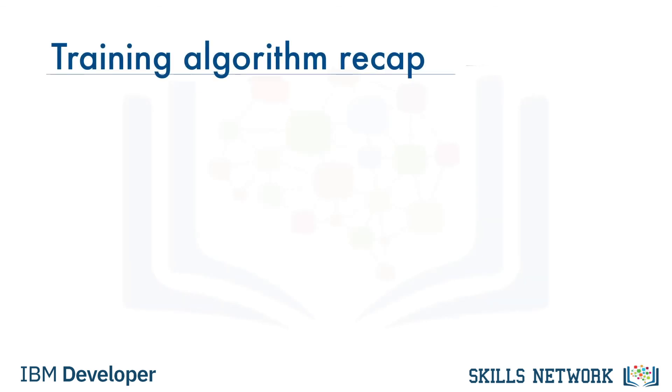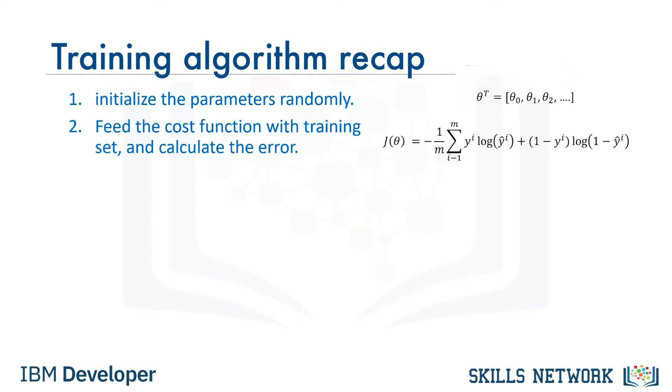Okay, let's recap what we've done to this point by going through the training algorithm again, step by step. Step 1. We initialize the parameters with random values. Step 2. We feed the cost function with the training set and calculate the cost. We expect a high error rate as the parameters are set randomly.